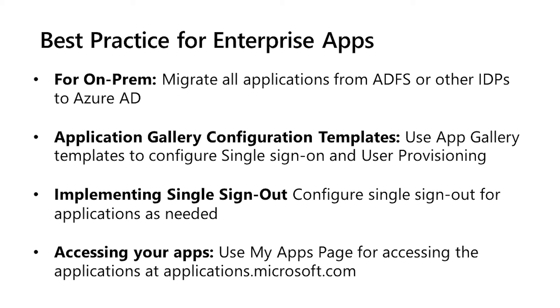Now that we have configured single sign-on for Zscaler, I'll share some best practices. If you have applications on your on-premises server or on-premises IDPs, we recommend migrating these applications to Azure Active Directory. If you have SaaS applications, we recommend using Azure AD Application Gallery templates for single sign-on and user provisioning, which provides efficient and secure authentication.